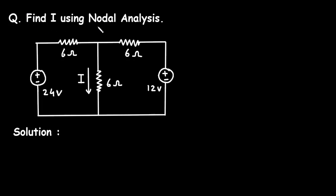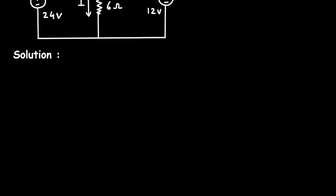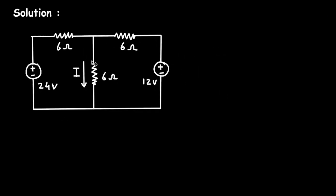Find current I using nodal analysis. In this circuit we have to find the value of this current I by using nodal analysis method. First of all, let's say this is a reference node or ground node.